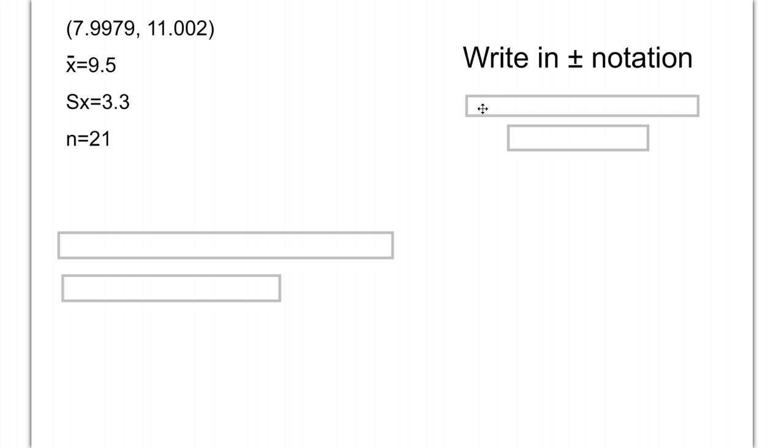In order to write this in plus-minus notation, we're going to write it as the mean, the best guess at the mean, plus or minus the standard error—how much error in either direction. And in order to do that, we're going to start with the mean that we're given.